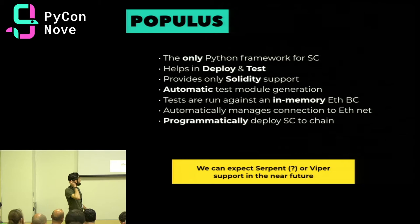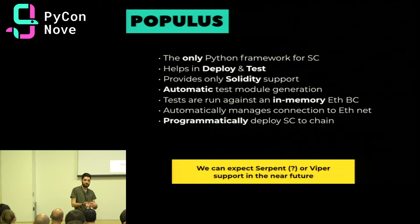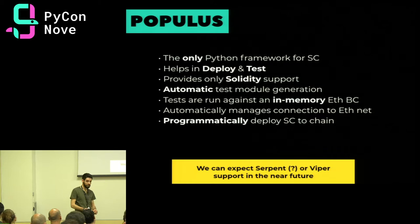There's also the Populus framework, which you can use to do automatic deploying and testing of smart contracts. It's very handy because it does automatic test generation and through useful command-line tools, you can deploy to any network and test your smart contracts very easily. The problem is that it only has Solidity support — the most used smart contract language right now — but there are open issues about implementing Serpent or Viper support in the future.